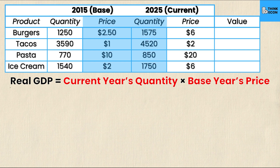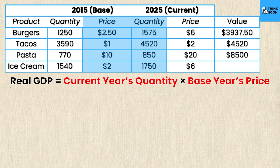Starting with burgers: the base year (2015) price is $2.50, multiplied by the 2025 quantity of 1,575 units, giving $3,937.50. For tacos: $1 times 4,520 equals $4,520. For pasta: $10 times 850 equals $8,500. And for ice cream: $2 times 1,750 units gives $3,500.